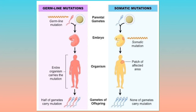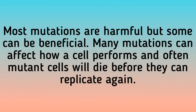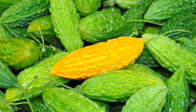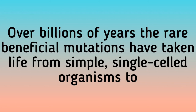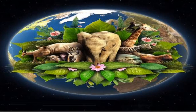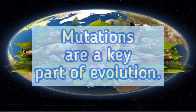If an error occurs in sperm or egg cells, the mutation can be passed to the next generation. Most mutations are harmful, but some can be beneficial. Many mutations affect how a cell performs, and often mutant cells will die before they can replicate again. Mutations are the only way new genetic material is produced. Over billions of years, rare beneficial mutations have taken life from simple, single-celled organisms to a diverse array of complex and spectacular species. Mutations are a key part of evolution.